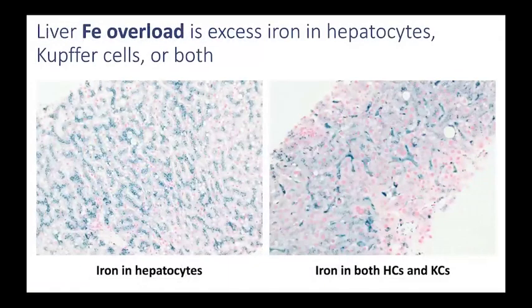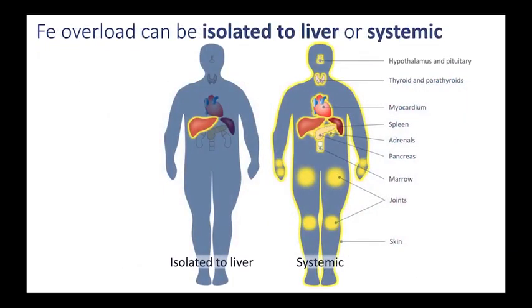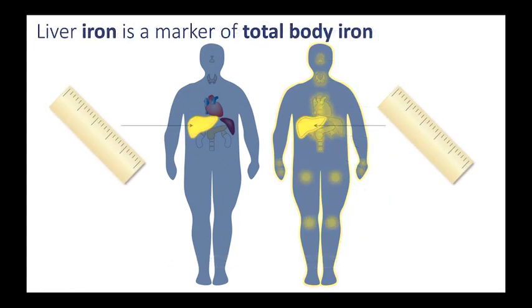Let's start with iron overload. Iron overload can refer to excess iron in hepatocytes, as shown on this Prussian blue stain slide on your left, or it can refer to excess iron in hepatocytes and Kupffer cells, as shown in this slide on your right. Iron overload can be isolated to the liver or can be part of a systemic process in which iron accumulates in other organs, especially joints, endocrine organs, and the myocardium. Regardless of whether iron overload is isolated to the liver or part of a systemic process, the measurement of liver iron is important because liver iron is a marker of total body iron.